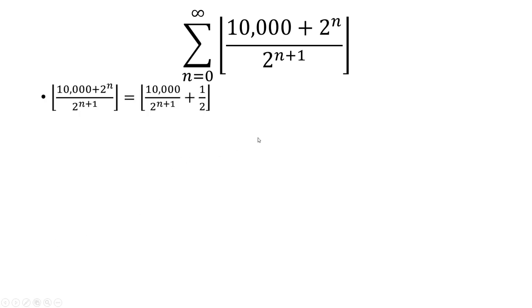First, I want to simplify what's inside the floor function, so I can break this up into two separate fractions. So they both have a common denominator of 2 to the n plus 1. The first fraction will be 10,000 in the numerator, and the other one will be 2 to the n. But notice that 2 to the n over 2 to the n plus 1 is just a half.